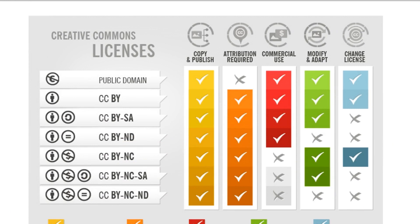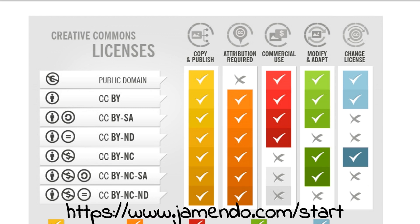CC stands for Creative Commons, and the letters BY, NC, and CA stand for attribution, non-commercial, and share-alike — the types of licenses that these tracks may contain. Also, for free music, check the website Jamendo Music, and at the end, fulfill your obligation of providing attribution to the artist who created the music.